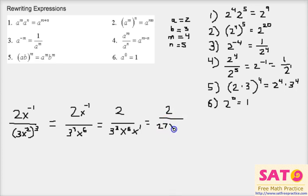Now we can simplify: 2 over 27, 3 times 3 times 3, and x to the seventh power. And that is our final answer.